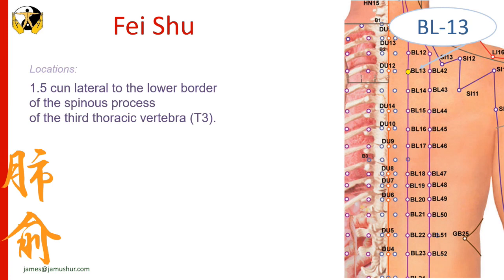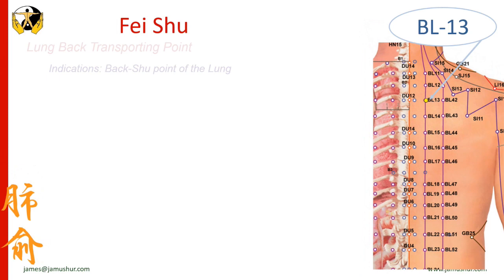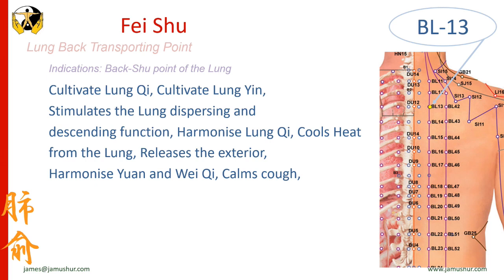Feishu, Bladder 13, is located one and a half cun lateral to the lower border of the spinous process of the third thoracic vertebra. Feishu is the back shu point of the lung, where the qi of the lung emanates from the interior to the body surface. In common with all back shu points, especially those of the yin zang organs, it has a strong action on regulating, tonifying, and nourishing its corresponding zang organ. At the deepest level, Feishu is the preeminent acupoint to treat all disorders of the lung, and is an essential point to tonify lung qi and nourish lung yin.